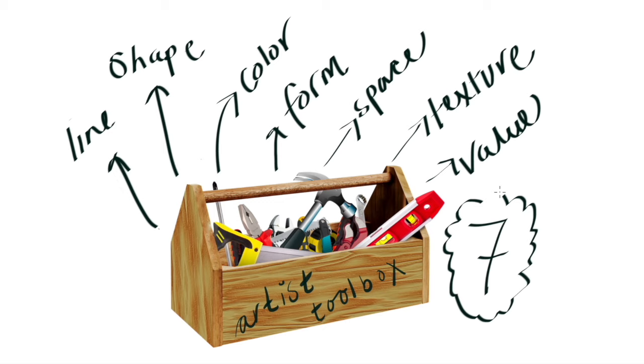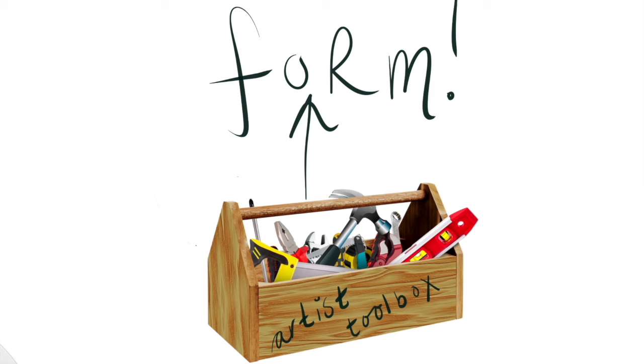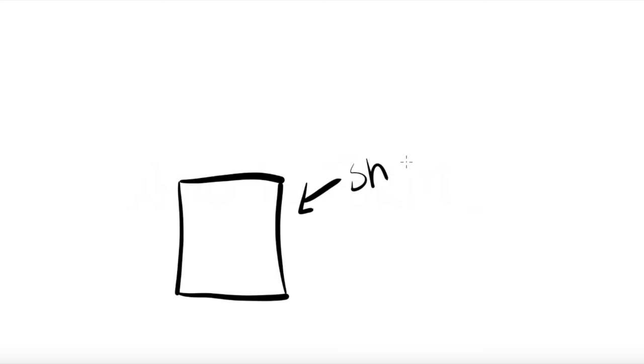This video is going to focus on the element of art form. Let's start by defining what is form, and we can do that by first defining what is not form. This is an example of a shape. It's two dimensional. It's not a form.